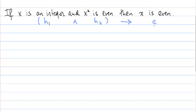In a proof by contrapositive, we start by assuming the negation of the conclusion, and we have to prove that this hypothesis is false. It can't be the case that h₁ and h₂, so it can't be the case that x is an integer and x² is even.